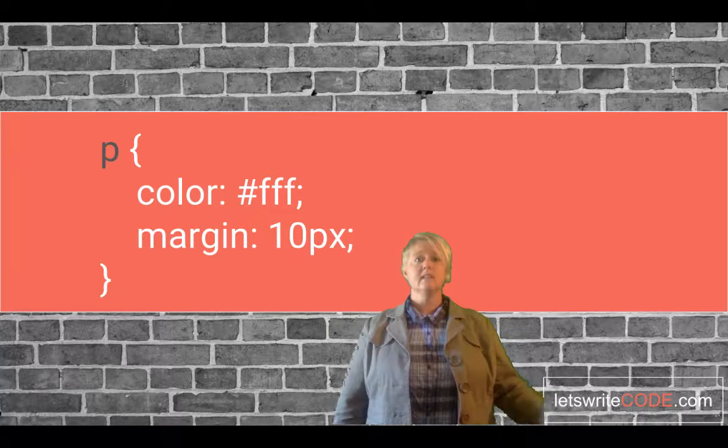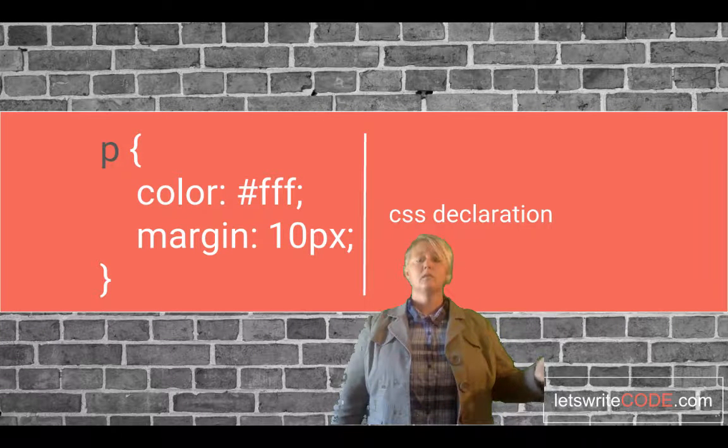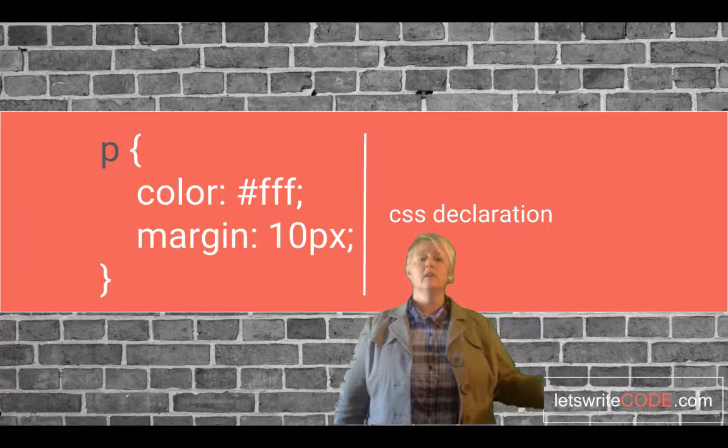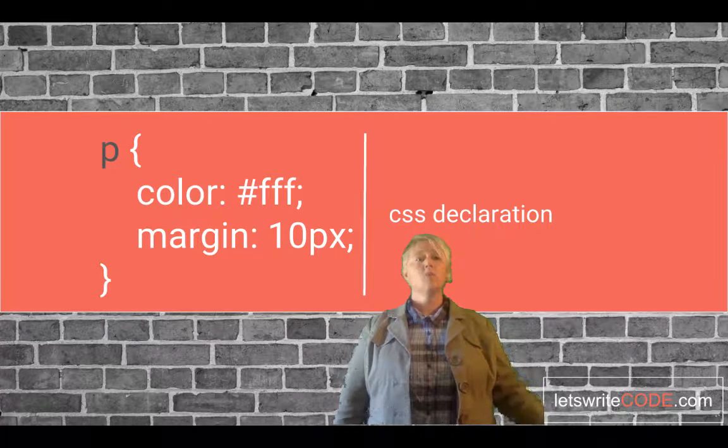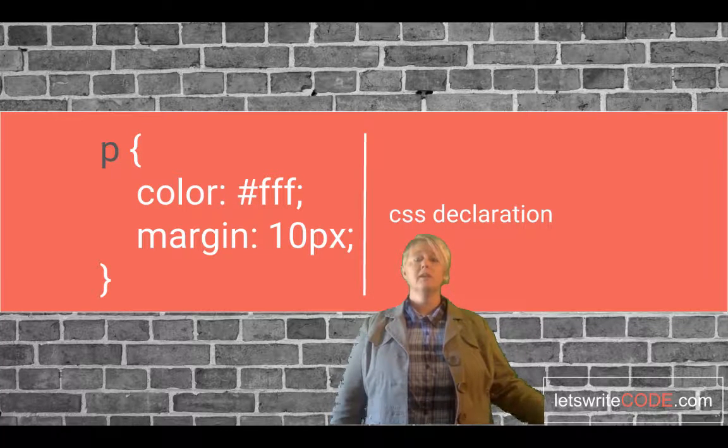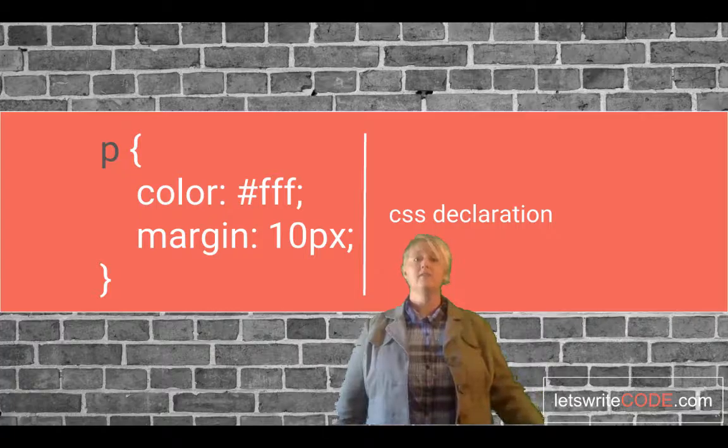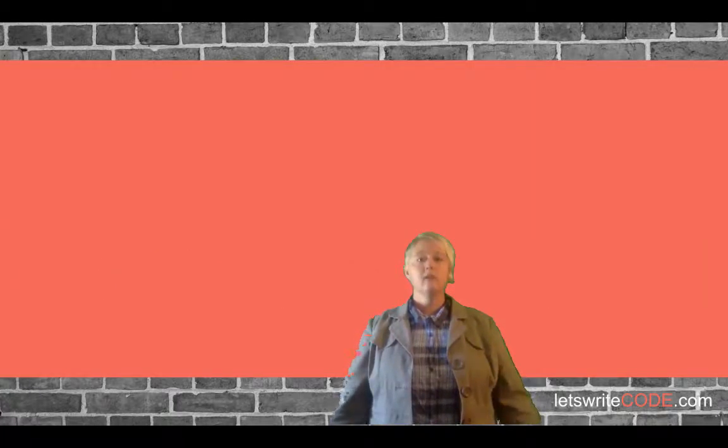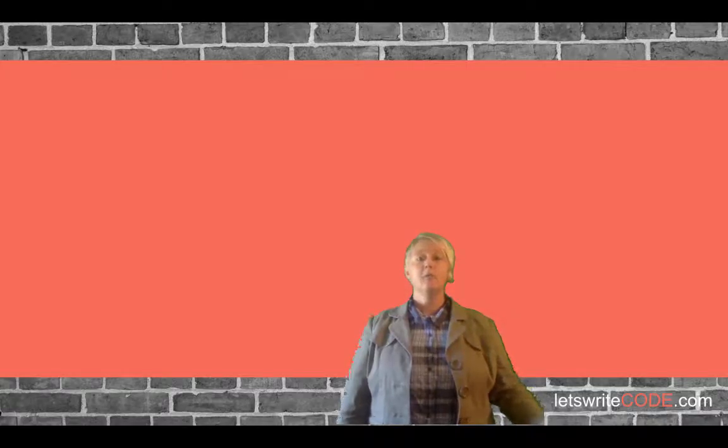Again, typically, CSS is written in this way. The P is the selector paragraph, the paragraph element, and what we're doing here is stating that for all paragraphs in our HTML, we're declaring that the color would be FFF, and the margin would be 10 pixels. Now, let's take a brief look at how we would use CSS with an HTML file to style our website.